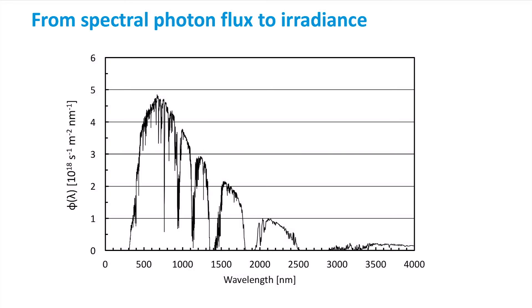We can obtain the spectral power density from the spectral photon flux by multiplying the number of photons of a certain wavelength by the energy of a photon. Using Planck's constant and the speed of light, we can calculate the photon energy from the photon wavelengths. Here the photon energy is given in 10 to the power 19 joules per nanometer.